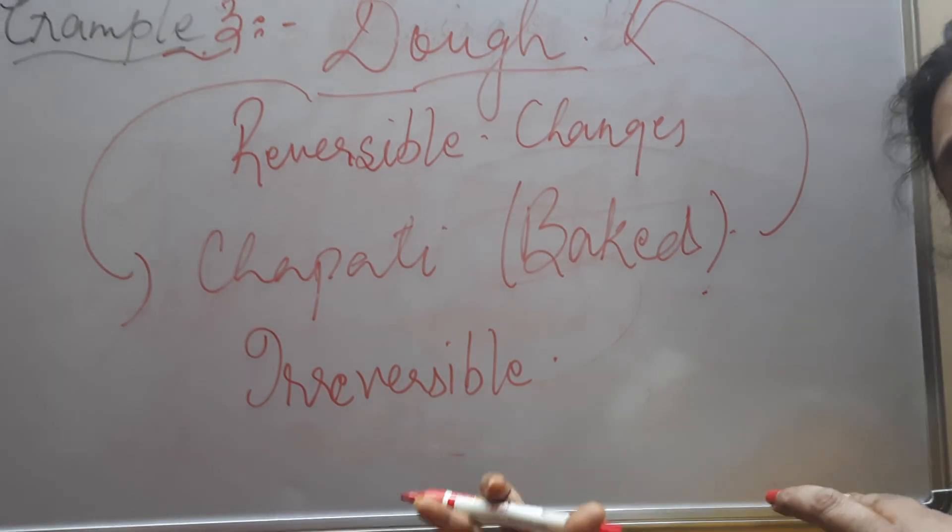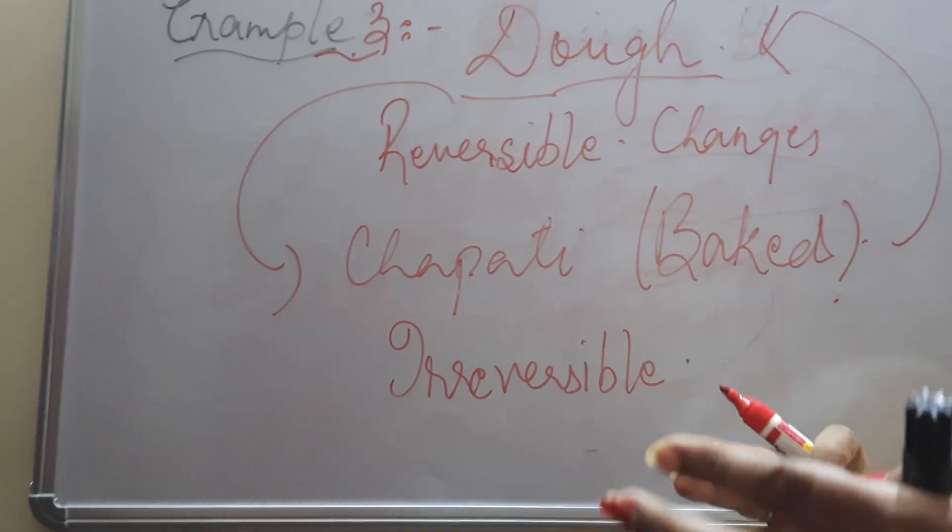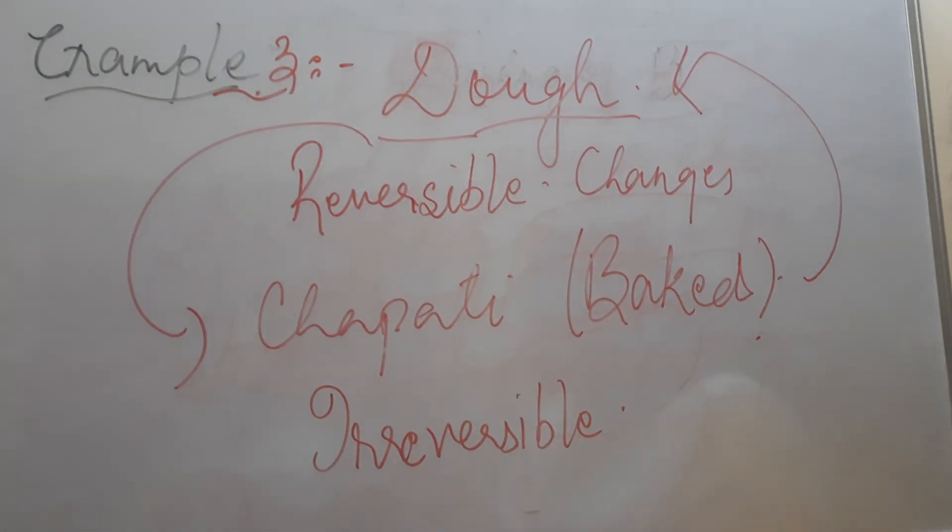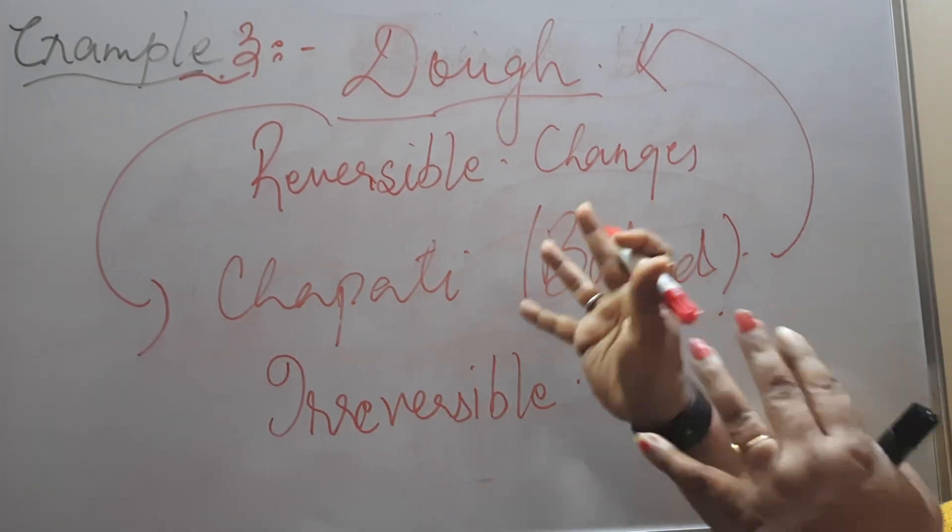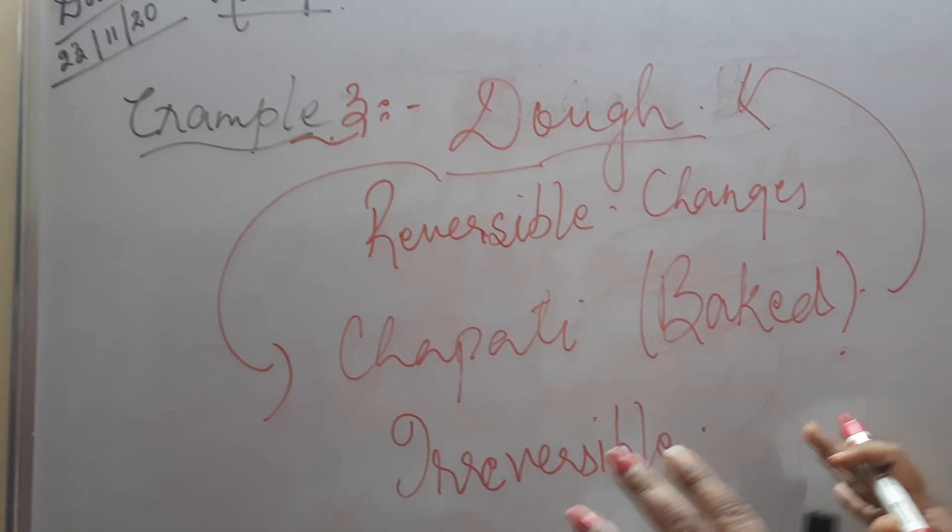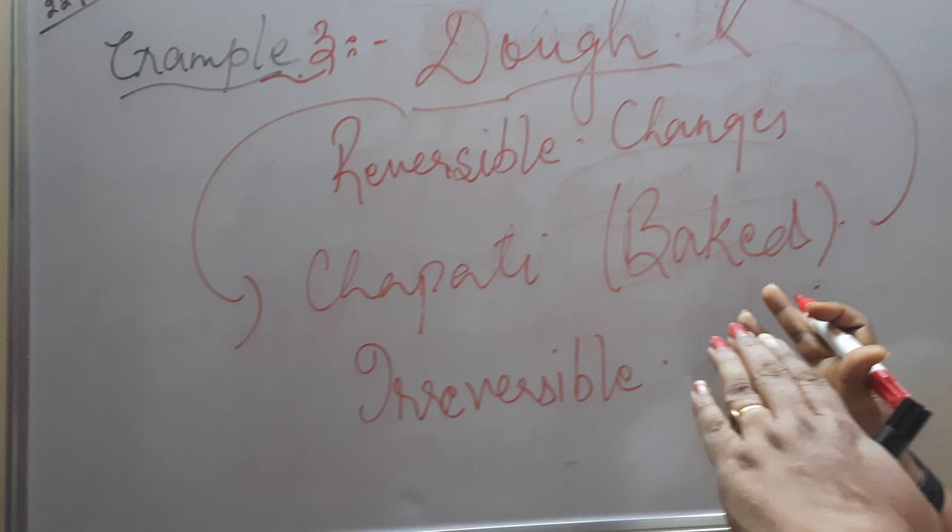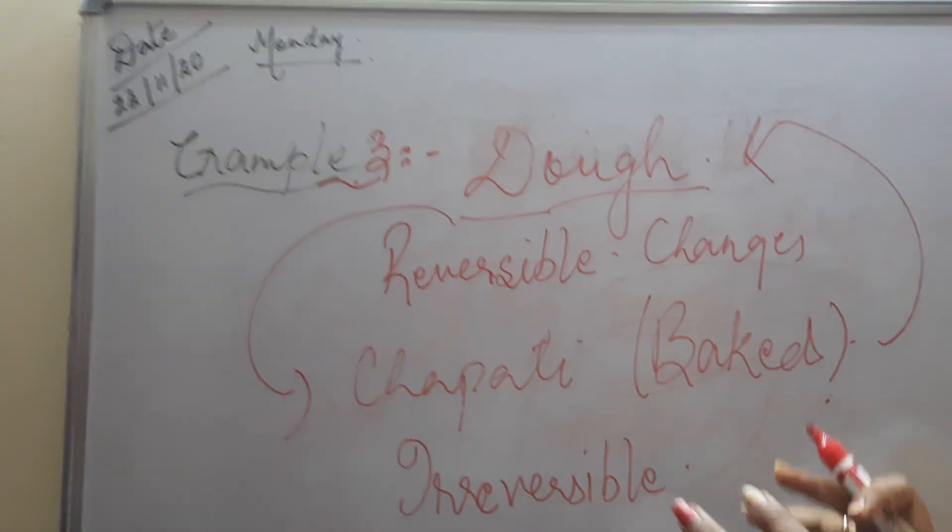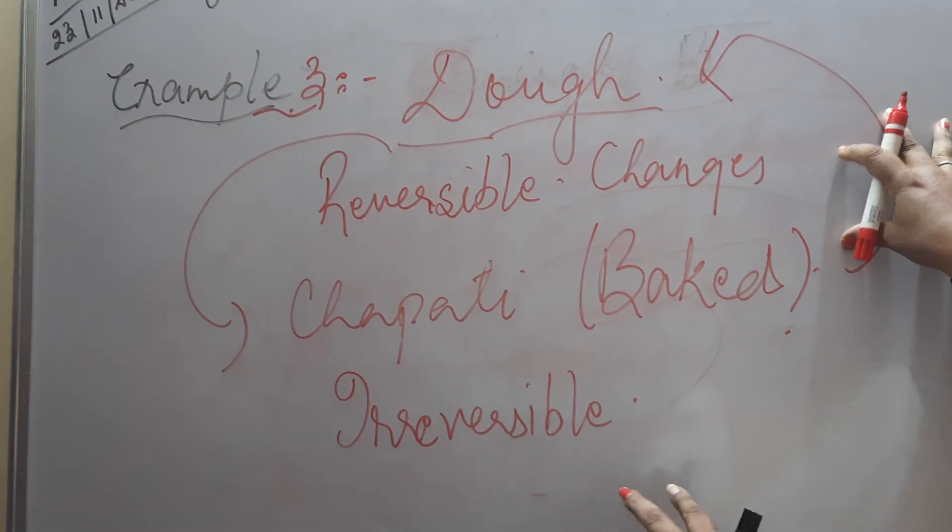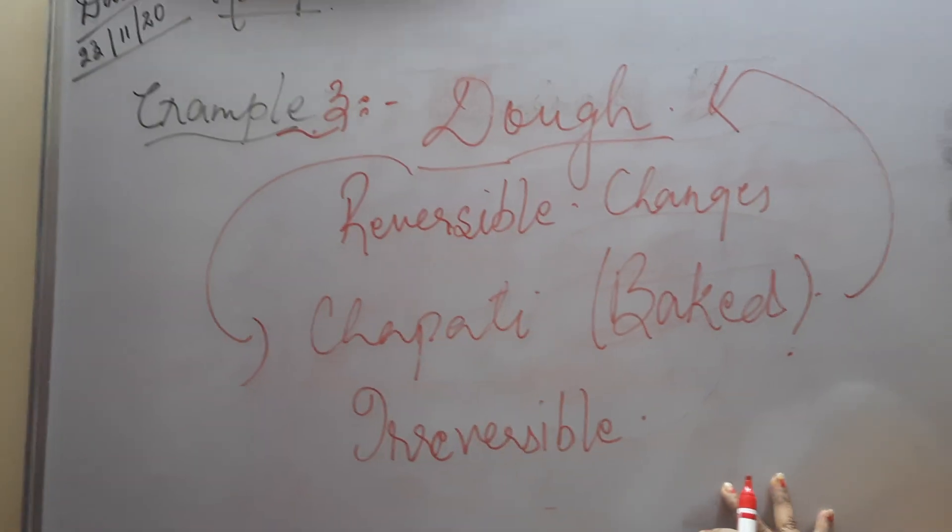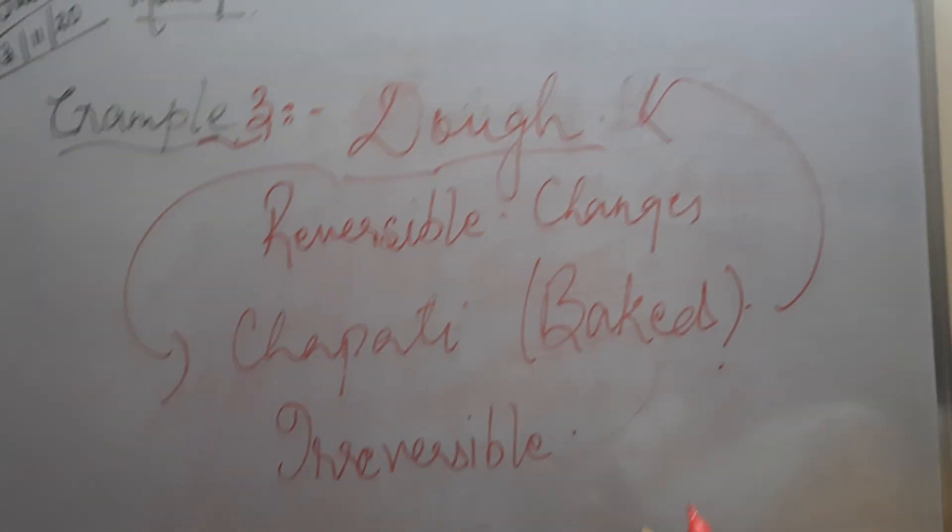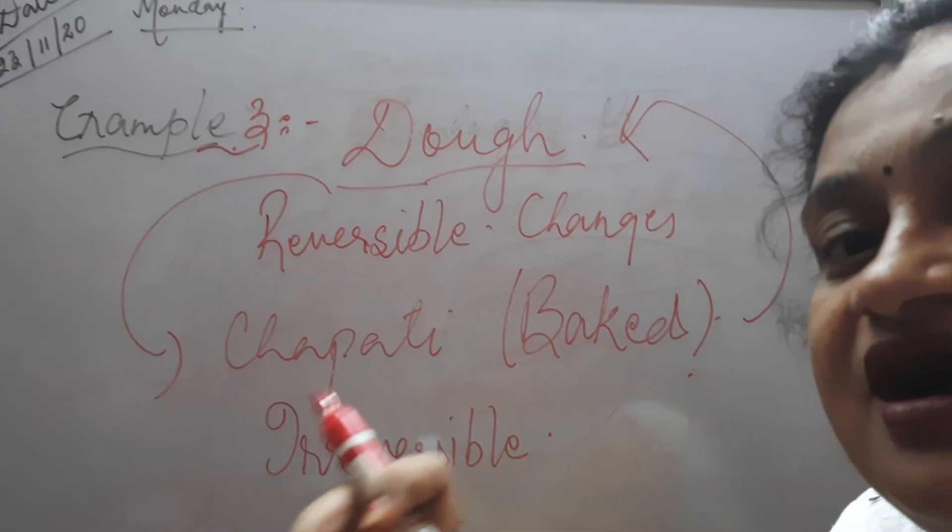With this, a new property or a new change and the properties which is totally different from its original part, then we come to a new type of change. Reversible or irreversible ke thode sa touch mein hai hai. That is physical and chemical change. Yeh ham next class mein parhenge today. Only the change which can bring to its original change. That or the changes. Again, you can get back to its original shape size. It is reversible.